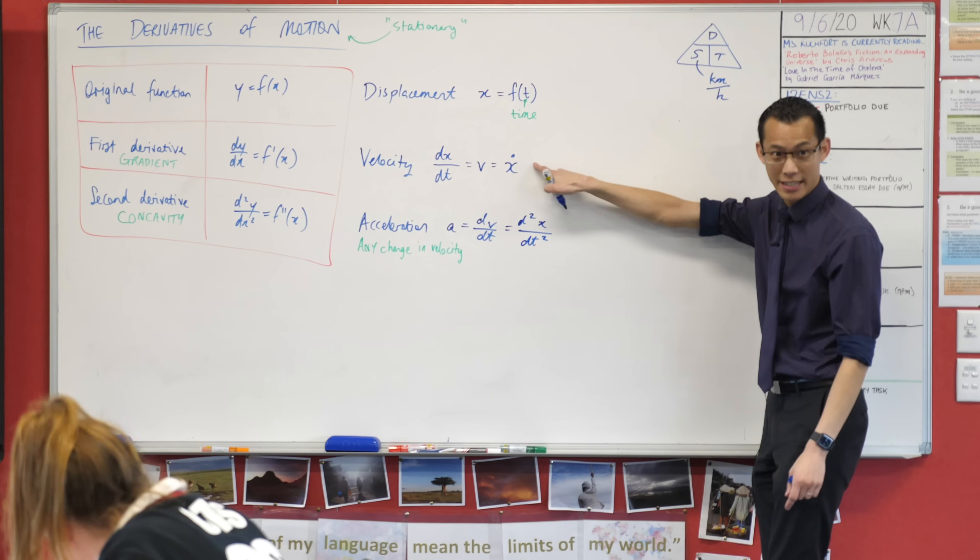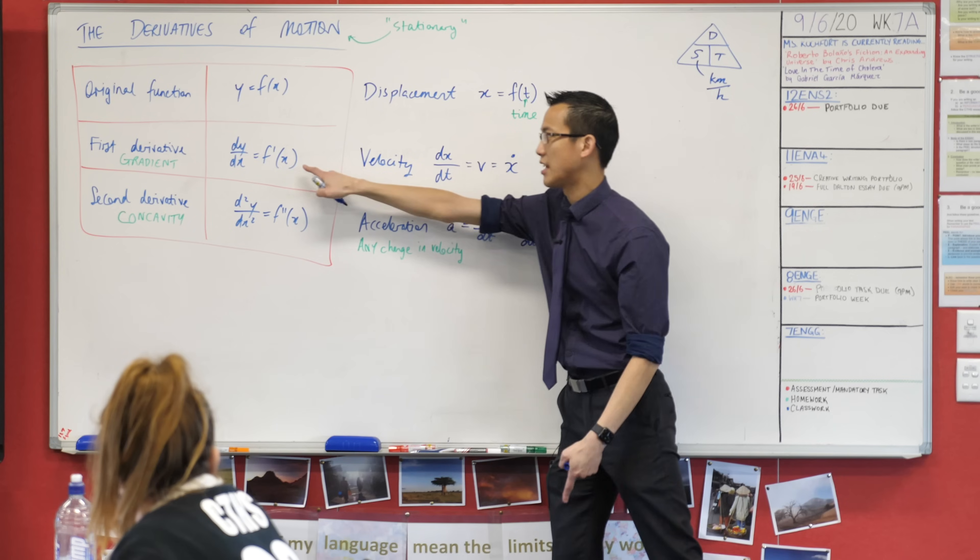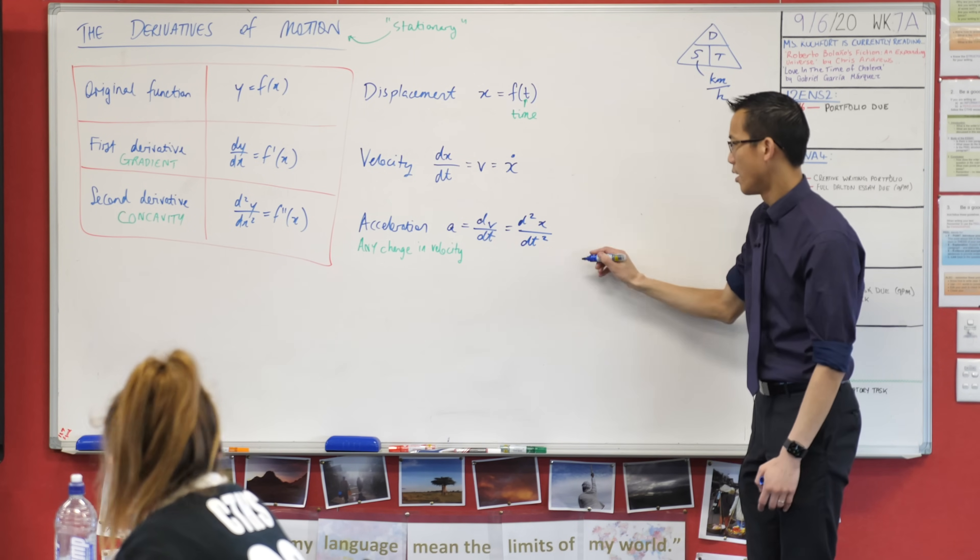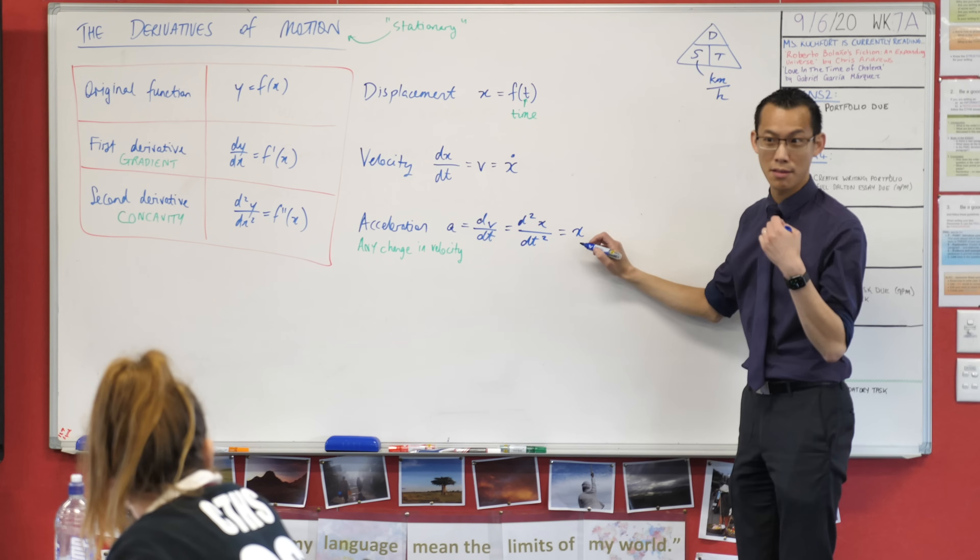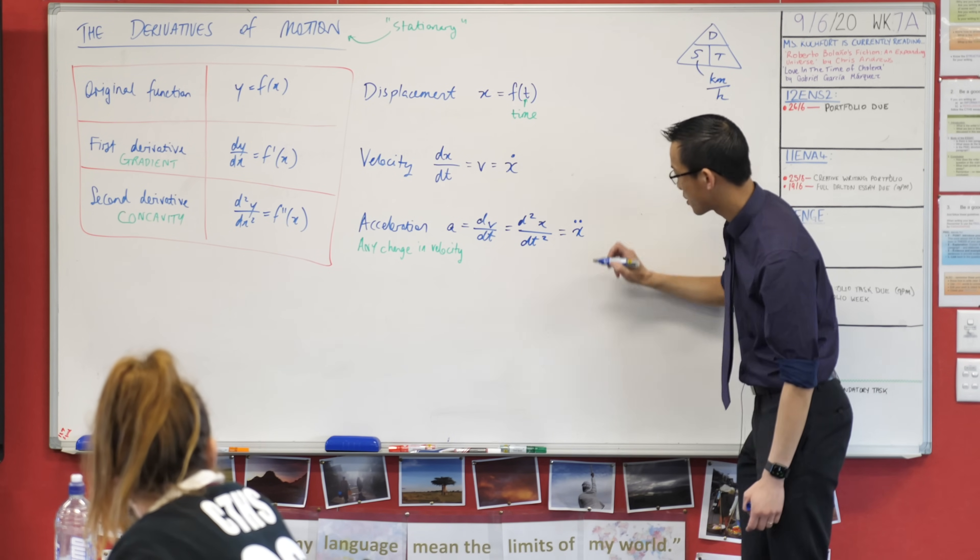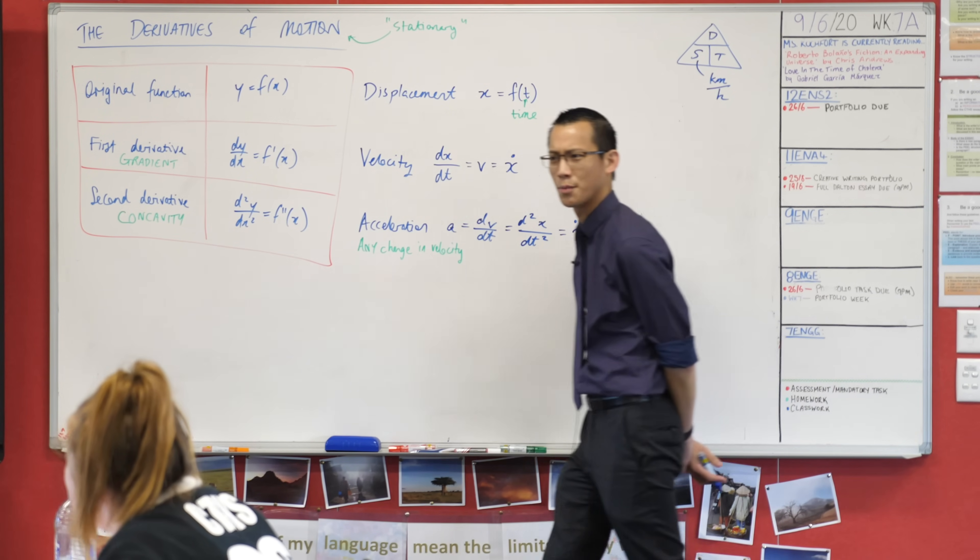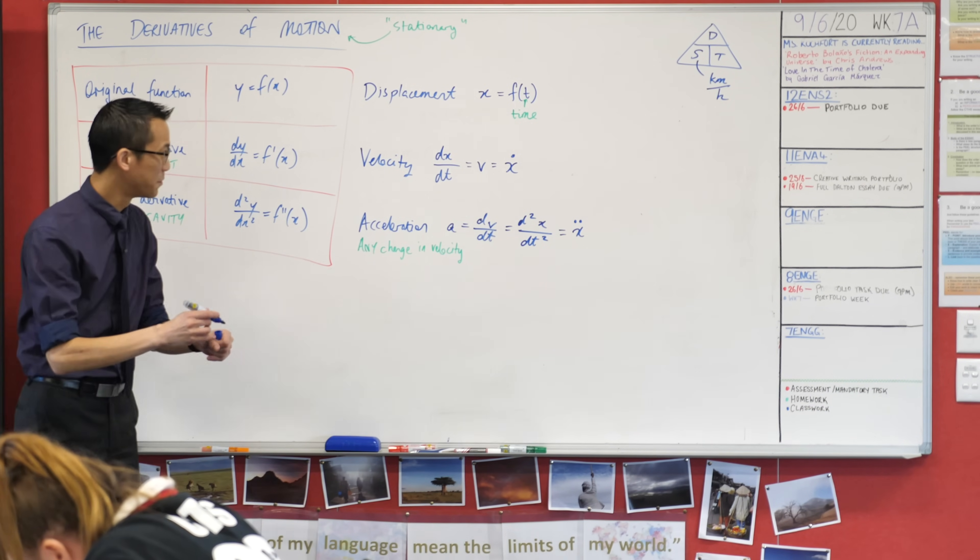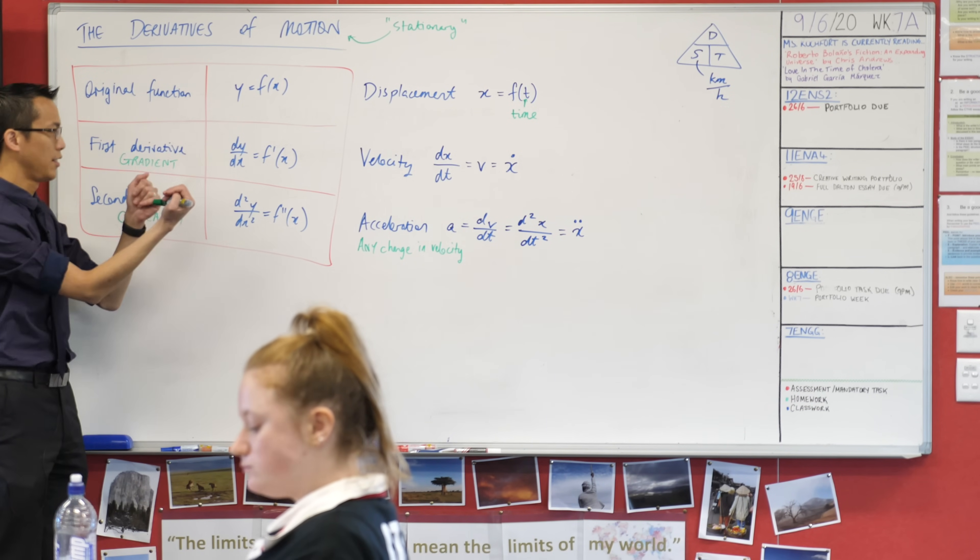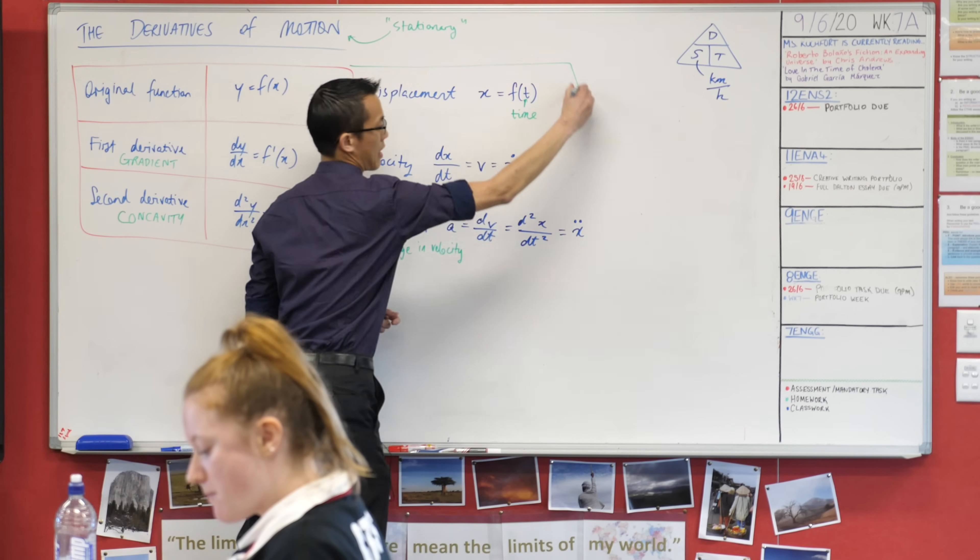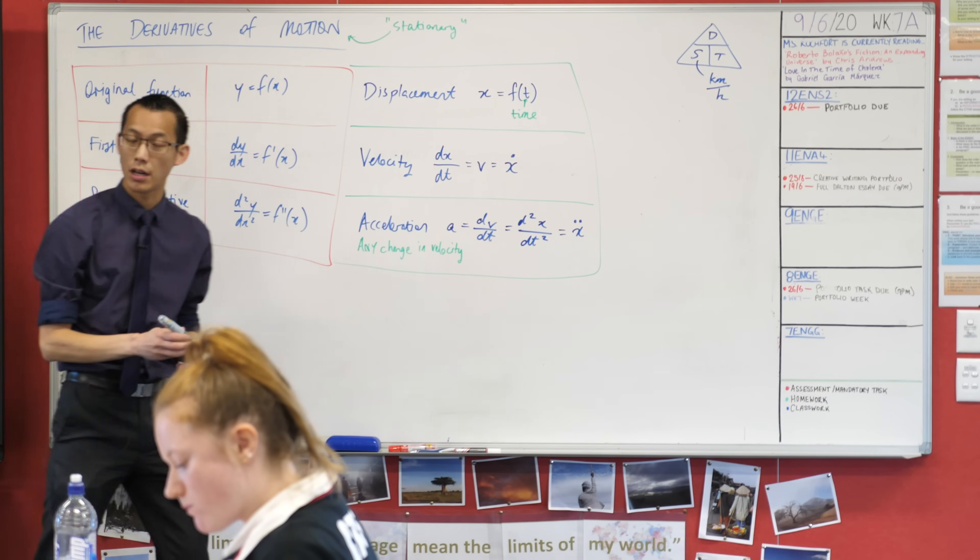There is one last notation you're going to use. You know how you saw that dot? It means differentiate once with respect to time. If I wanted to do it again, instead of having an x with one dot, you'd have an x with two dots. That means differentiate twice with respect to time, and it looks a bit like a weird uncomfortable emoji, but don't overthink it too much. This is our extension to thinking about original function, first derivative, second derivative - this is what it looks like when you're in the land of motion.